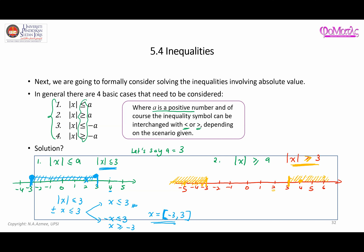Taking out the absolute value: plus-minus x ≥ 3 means x ≥ 3 and negative x ≥ 3. The second gives x ≤ negative 3. So the solution has two parts: x ≤ negative 3 and x ≥ 3. In interval notation, this is negative infinity to negative 3, union 3 to infinity.